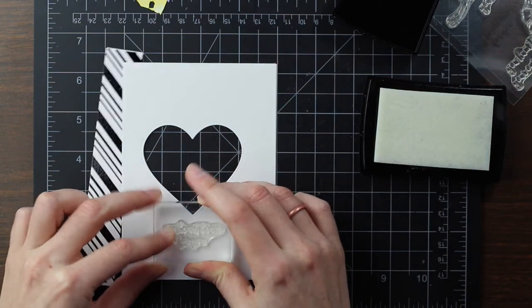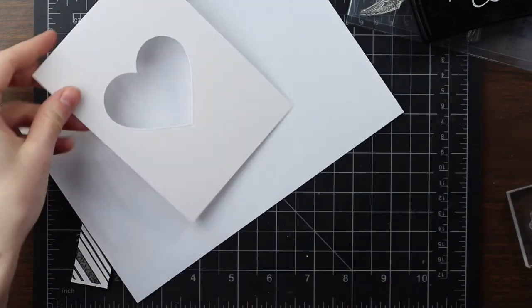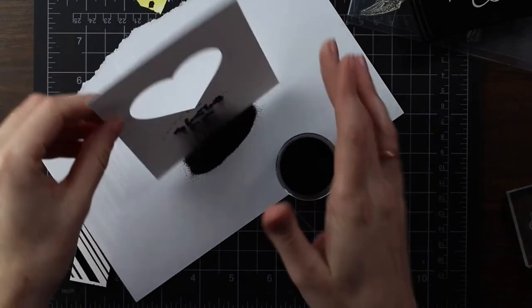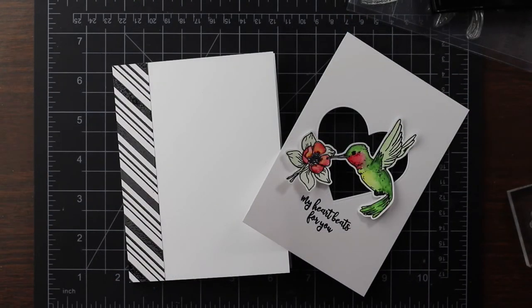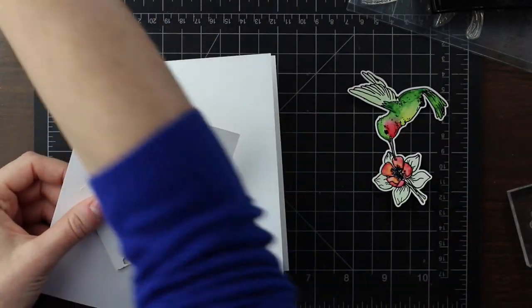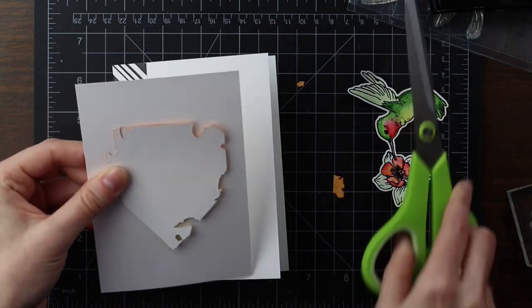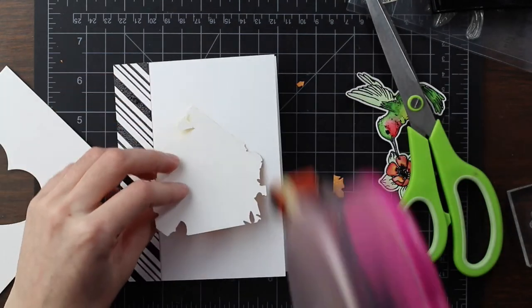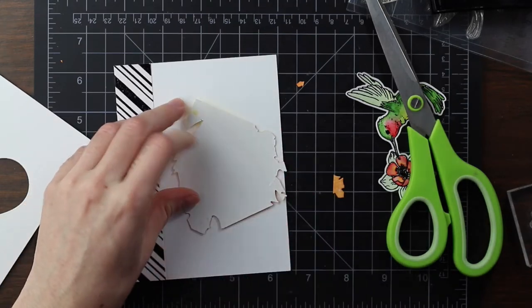So I heat set that and then I also stamped the sentiment and embossed that with the same black detail embossing powder. And then I'm just going to adhere that blended background that I made onto the card base. And because it's got to fit that heart perfectly, I kind of placed it right behind that panel and then I used the panel to kind of guide it down.